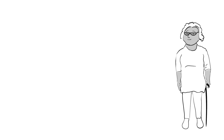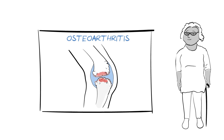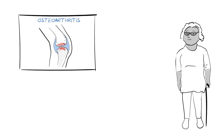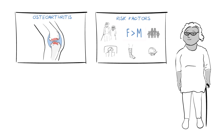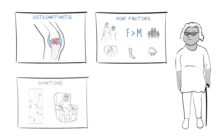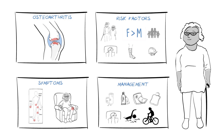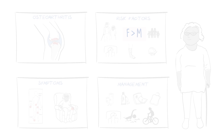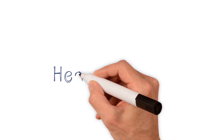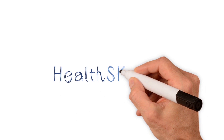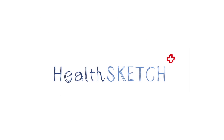In this health sketch, we've talked about the common long-term condition osteoarthritis, which leads to inflammation of the joints. We've talked about who is at risk, how it occurs, the symptoms that result, and ways of managing the condition. We hope this health sketch has been helpful for you and those around you. Health sketch — health for all to see.